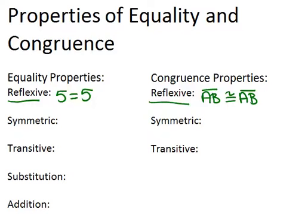The next property is the symmetric property, which says that if two things are equal — for example, if 2x equals 6 — then you can switch the order: 6 also equals 2x. You're allowed to switch the order in an equation, and it will still be the same thing.